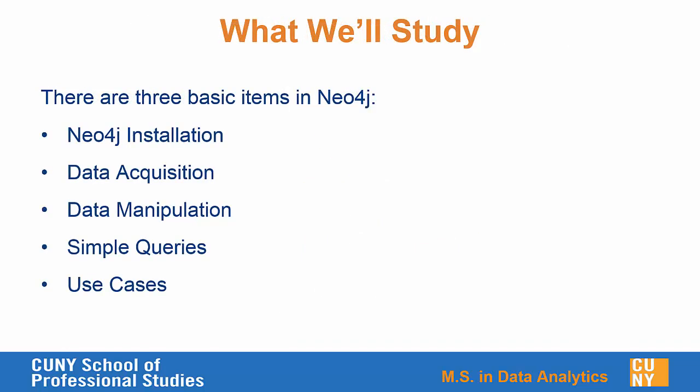Here's what we'll study in the next few lessons. We'll look at what it means to install Neo4j — a relatively straightforward process — with versions for both Windows and Unix-based environments. We'll then take a brief look at how to acquire data and put it into Neo4j, both from a command line and a batch import perspective. We'll also cover how to manipulate data such as updating information and deleting old objects. We'll look at simple queries and how to build them within Neo4j. Finally, we'll look at some common use cases for Neo4j.